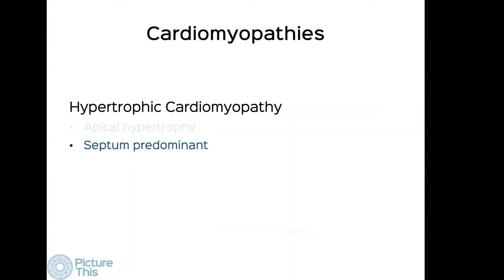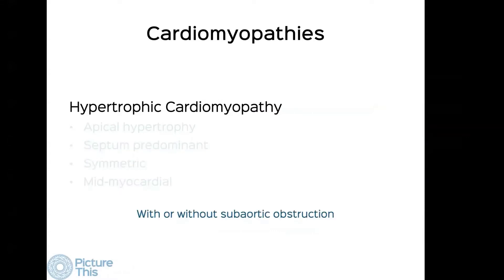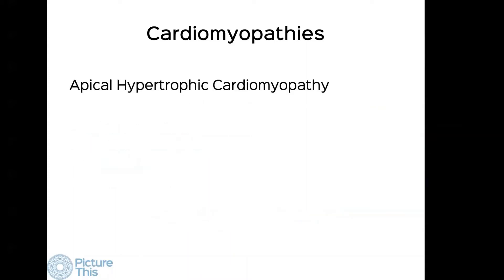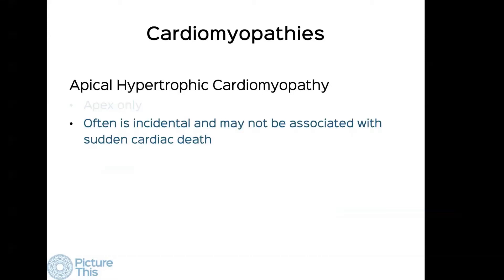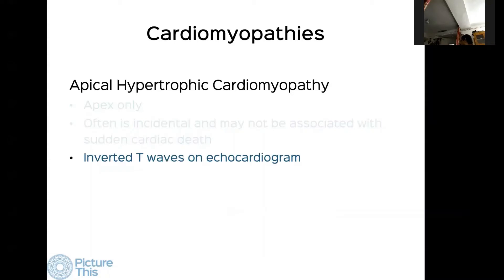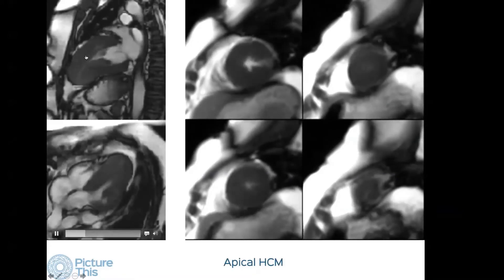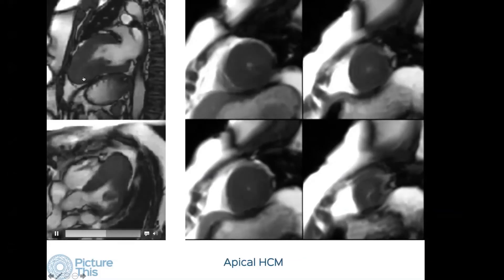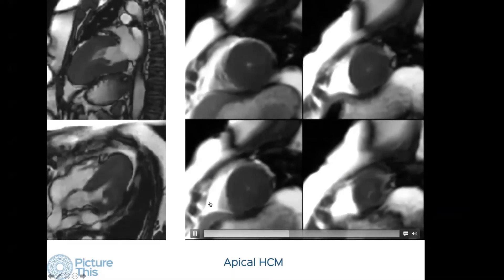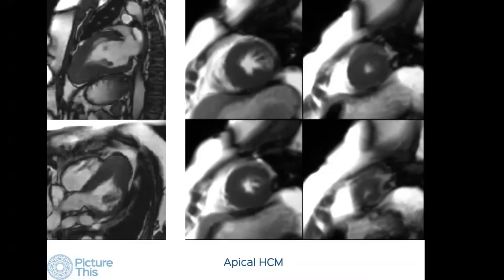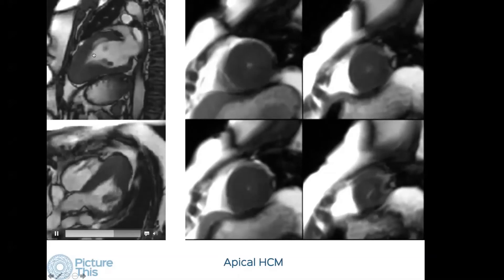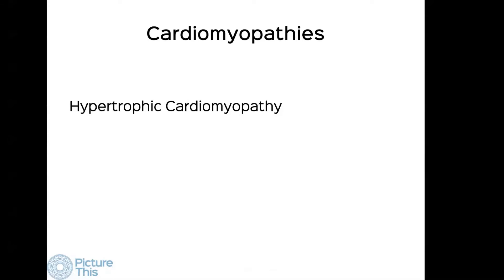For hypertrophic cardiomyopathy, we can differentiate among different types, assess subaortic obstruction, and risk-stratify based on the extent of fibrosis. Apical HCM is easy to diagnose and is sometimes seen even when echo is normal. Here we can see the two-chamber view with the ace-of-spades appearance and apical systolic obliteration, confirmed on short axis and four-chamber views — this is a classic severe apical HCM with the ace-of-spades appearance of the residual LV cavity.